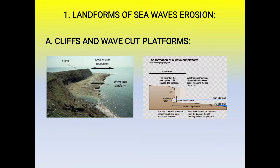Swash is also known as forewash — it is the advance of sea water up a beach after the breaking of a wave. When the water flows back along the beach slope, it is known as backwash. Backwash is the receding movement of sea water down a beach after the breaking of a sea wave. Coupled with these, the effect of high tide advance and low tide recession play an important role in the modification of the coastline. Erosion, transportation, and deposition are the most important elements to modify any coastline.